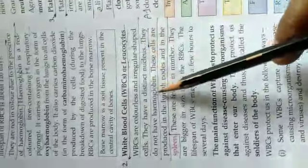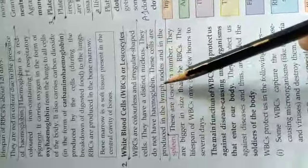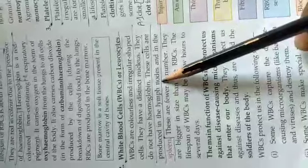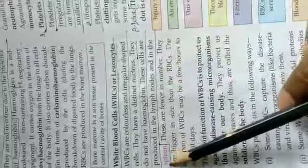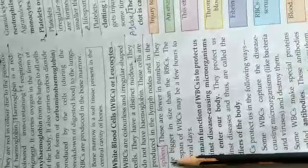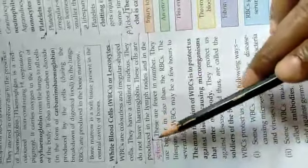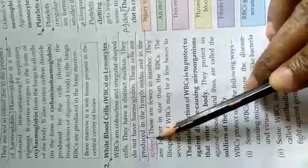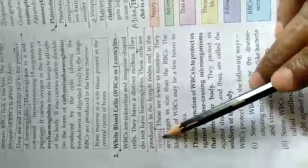They do not have hemoglobin, and these cells are produced in the lymph node. What is lymph node? I will tell you later. These cells are produced inside the lymph node and in the spleen. I will tell you about spleen. Spleen is an organ, and this organ is situated on the upper side of the stomach. So above the stomach there is an organ called spleen, and spleen plays an important role in our immune system. RBC, WBC, and platelets are stored in this spleen, in this organ only.